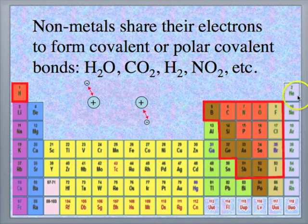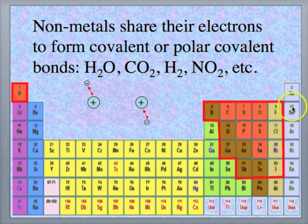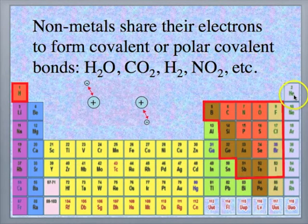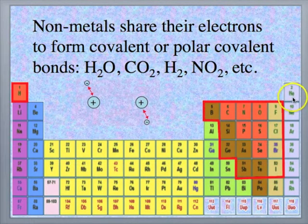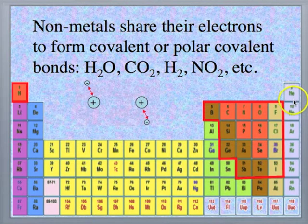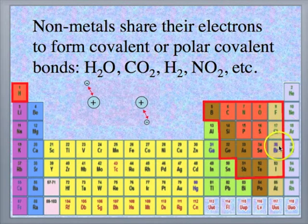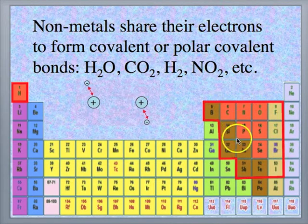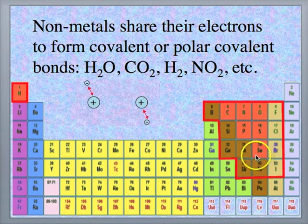On the extreme right, the very last column, the atoms are called the noble gases. They don't react very much, although the larger ones can be forced to react. But the ones we're interested in mostly are the ones in the box here, the non-metals.